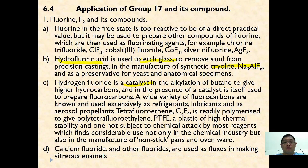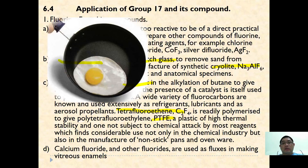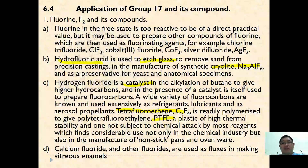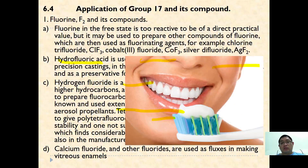Tetrafluoroethene can be polymerized to give Teflon (PTFE), which is especially useful in non-stick frying pans. Calcium fluoride is also used in toothpaste to strengthen tooth enamel.